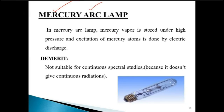In the mercury arc lamp, mercury vapor is stored under high pressure and excitation of mercury atoms is done by electric discharge. The construction is similar to the previous cases — the difference is that we are filling the tube with mercury vapors. A demerit is that it is not suitable for continuous spectral studies because the source of radiation is mercury and there are several spectral lines missing.